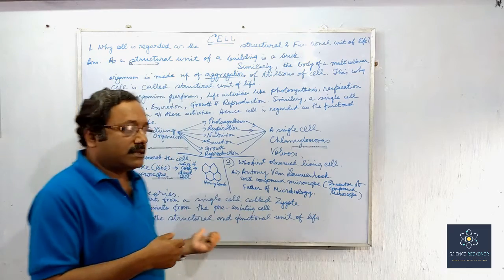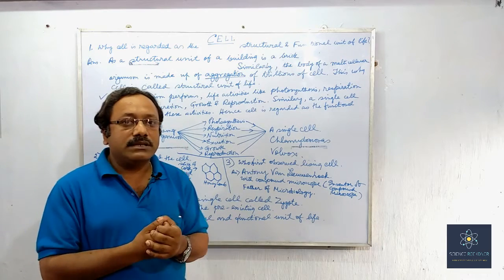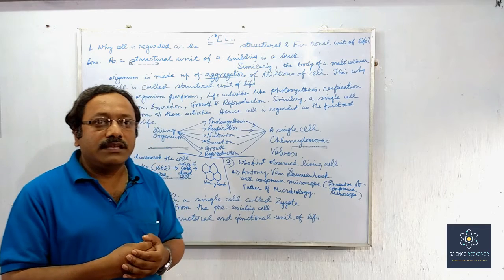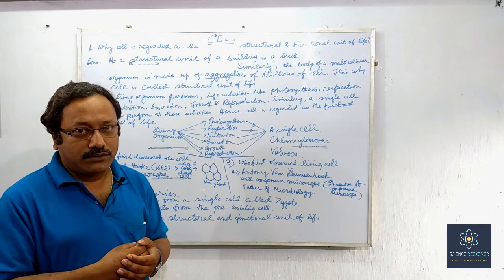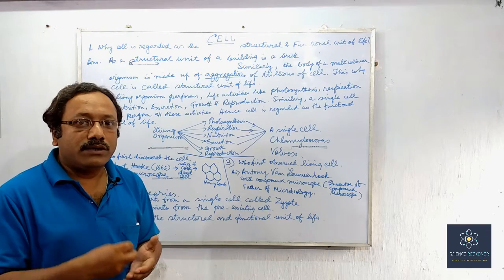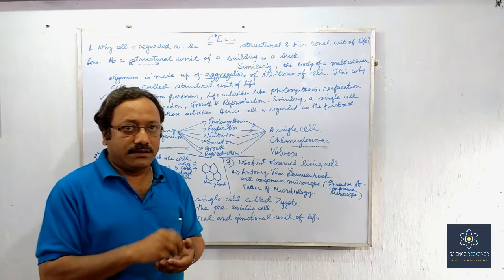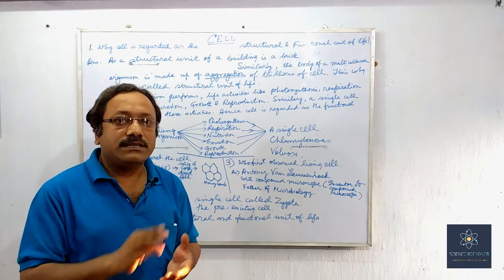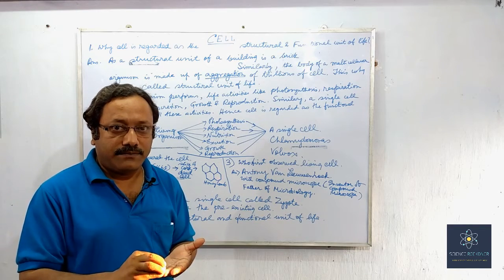At last, the cell theories. Number one: the cell originates from a single cell called the zygote — life starts from the zygote. Number two: the cell originates from a pre-existing cell. Number three: the cell is the structural and functional unit of life.